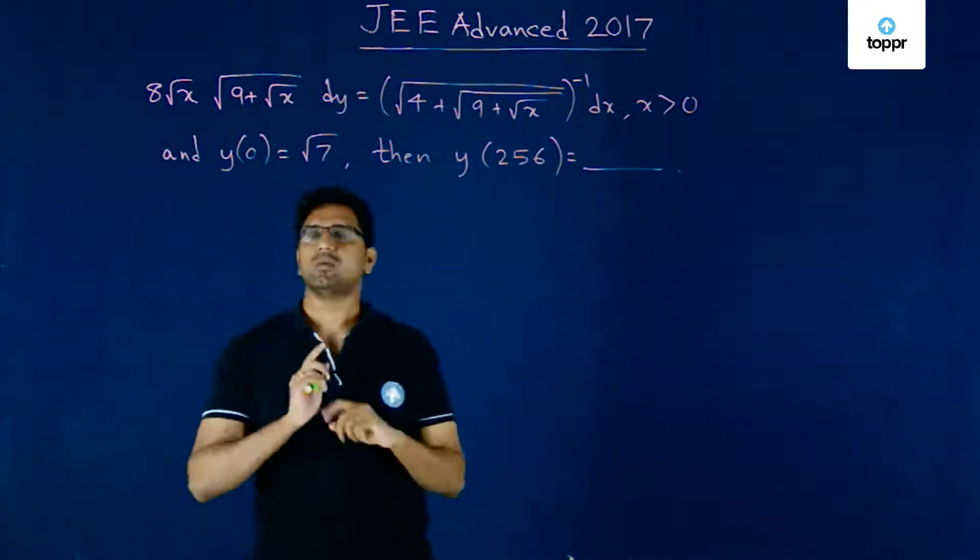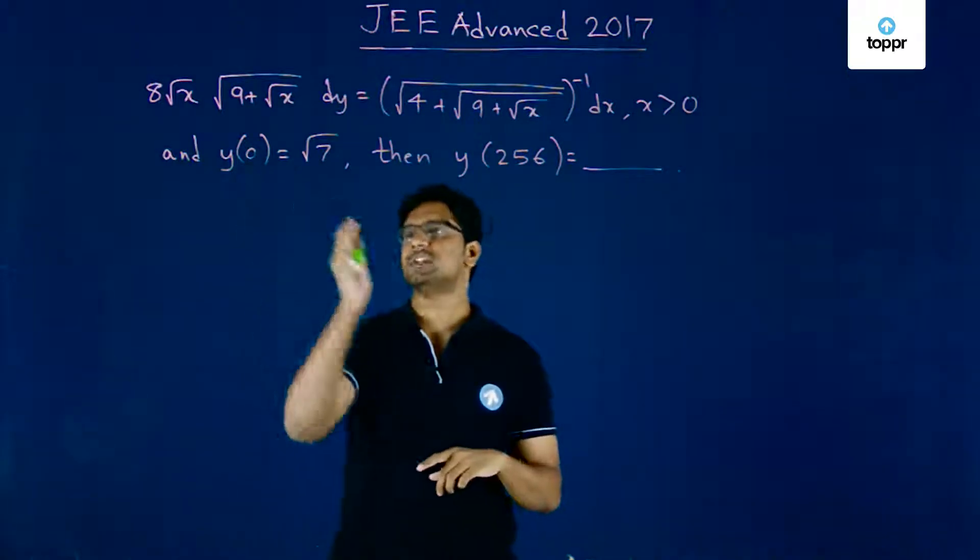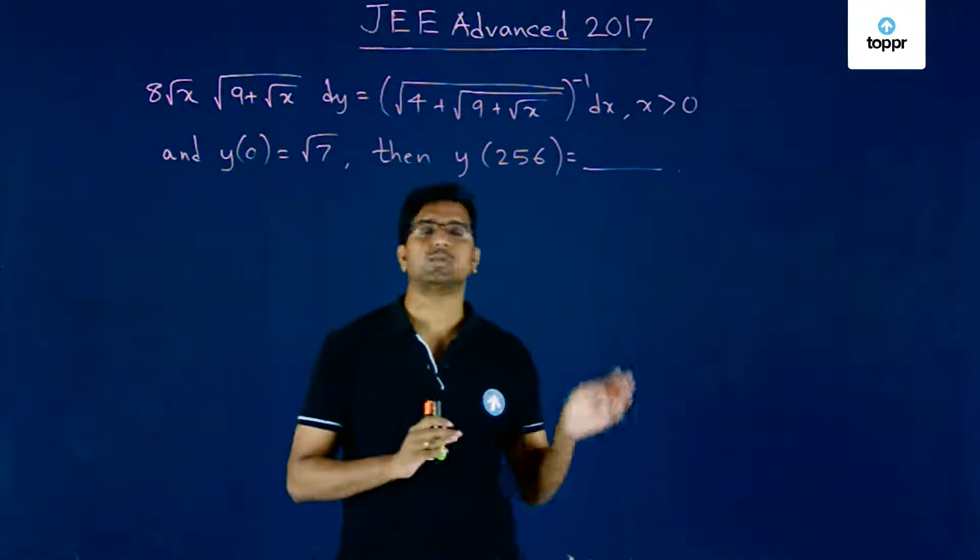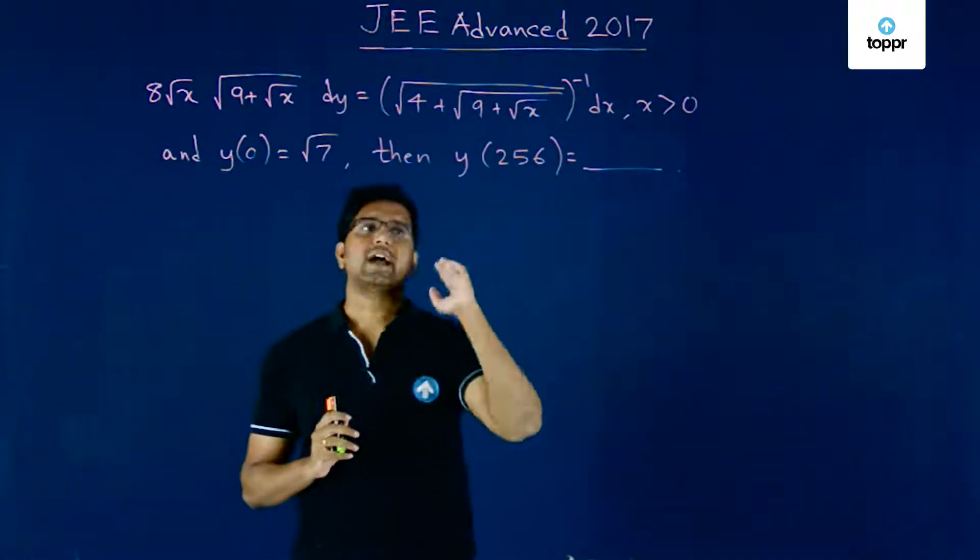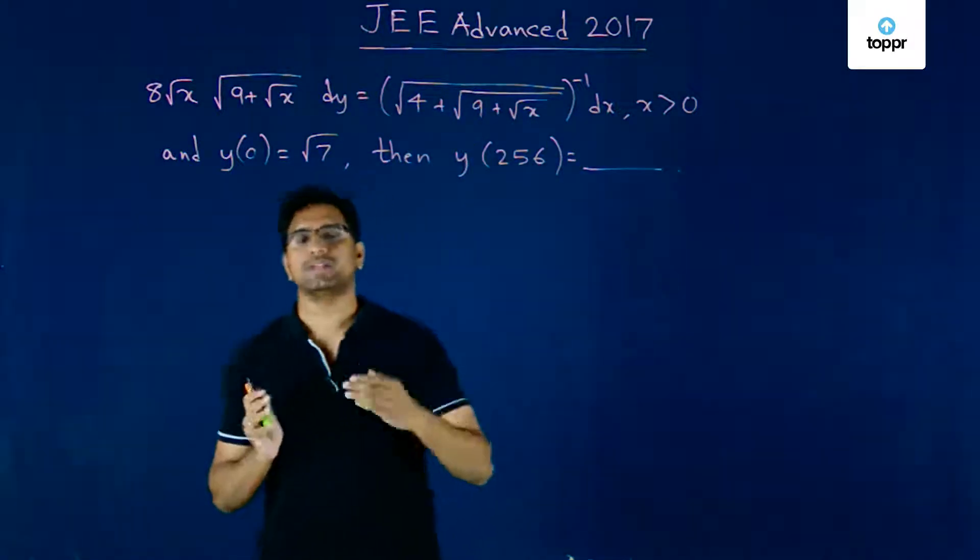There are boundary conditions specified: y(0) is given to be root 7. We need to find out the value of y at the point x equals 256.